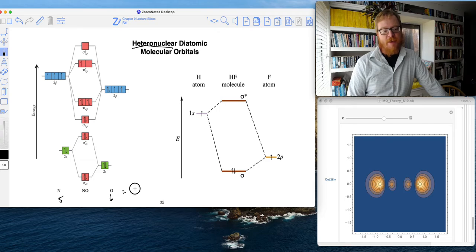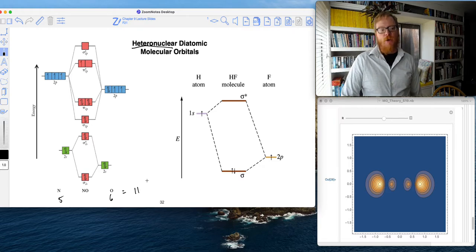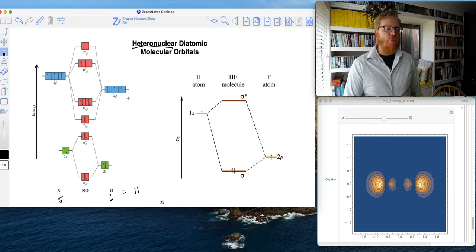So if we were to do that, we remember that nitrogen has five electrons, oxygen has six. So that gives me 11 electrons. And remember, when we have an odd number of electrons, we're gonna have a radical.